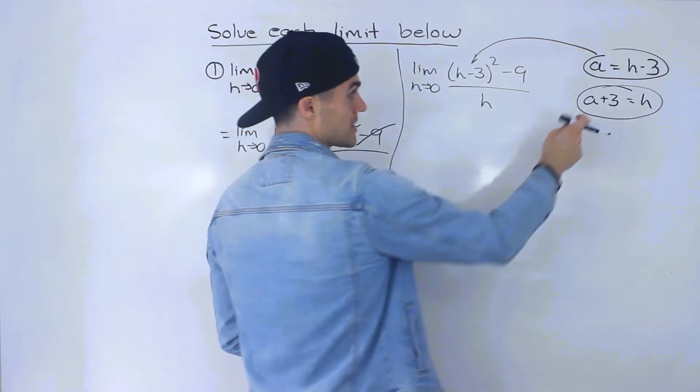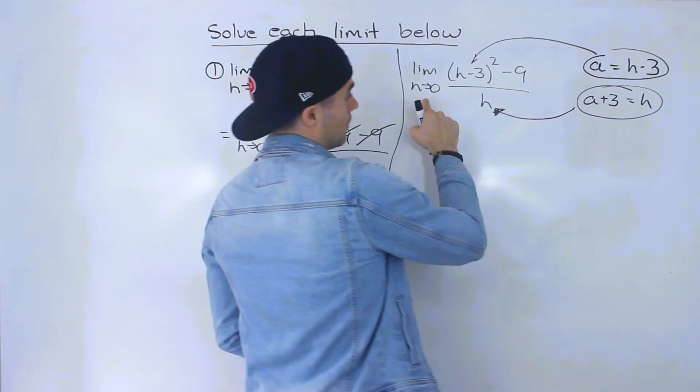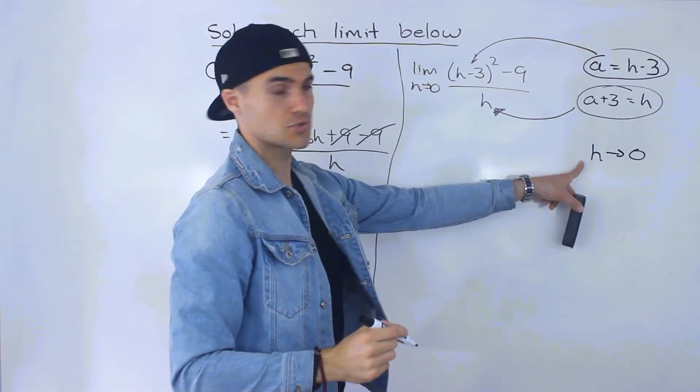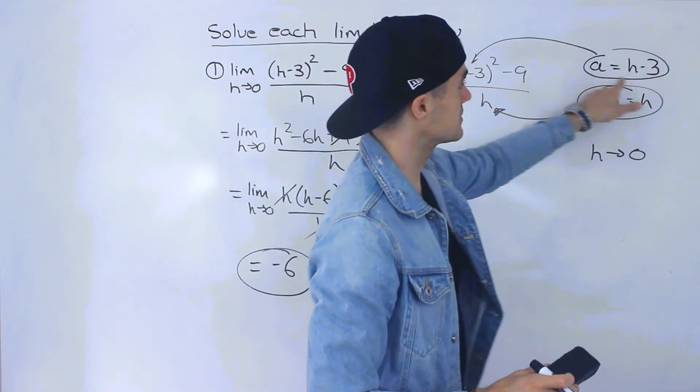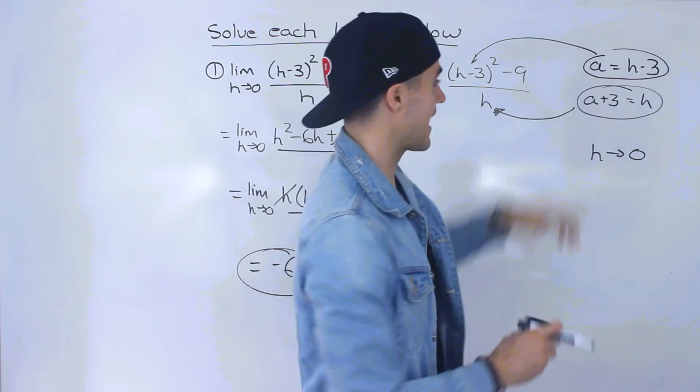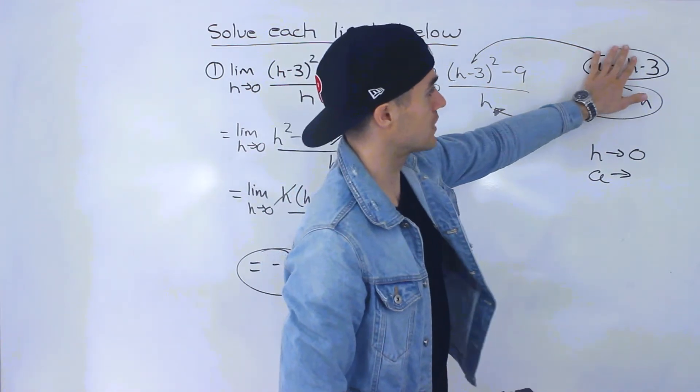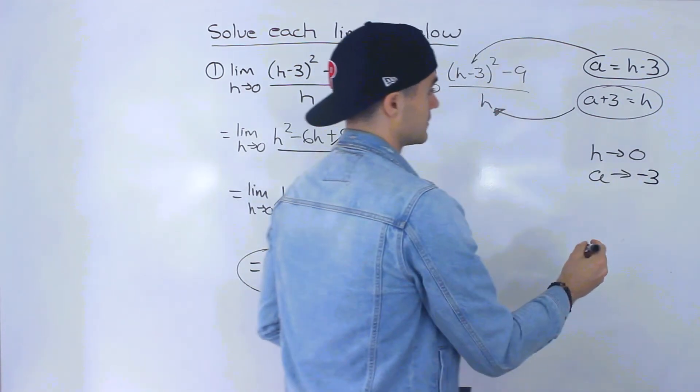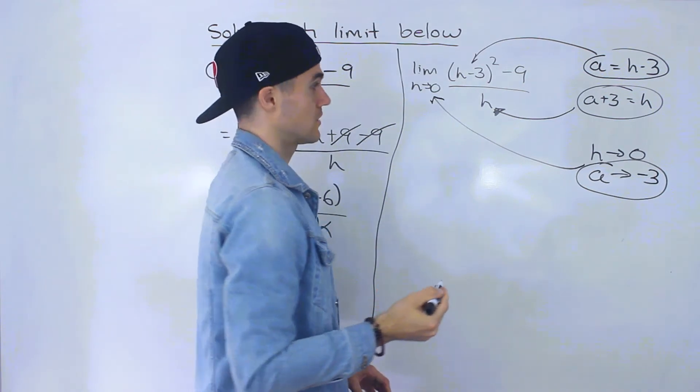And then also we need to sub in something for as h approaches 0. Now notice as h h in this expression as h approaches 0. What's the a value going to approach? The a value is going to approach negative 3. Right if we plug in 0 for h the a value is going to approach negative 3. So we can now sub in this for that h right there.